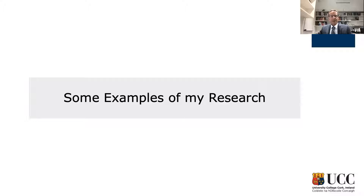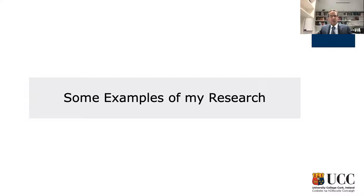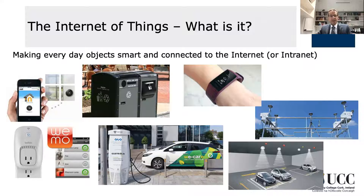I'd like to talk about what kind of research I do. It's quite broad, but focused on the Internet of Things with a view around sustainability — and there are two aspects: IoT for sustainability, and sustainable IoT. So first, what is the Internet of Things? It's effectively making everyday objects smart and connected to the internet or some network. We're all familiar with some examples: turning on our heating from our mobile phones, or smart appliances connected to smart plugs.